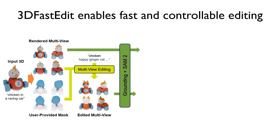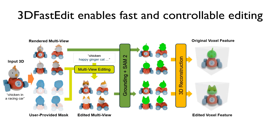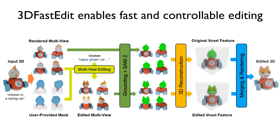After editing, we segment the edited regions with Grounding DINO and SAM2. We then reconstruct both the input and edited views using a feedforward reconstruction model. Finally, we merge the extracted voxel features to combine edited new parts with the original shape.